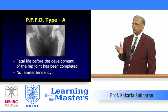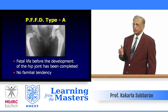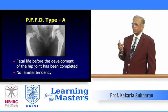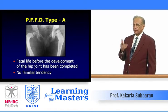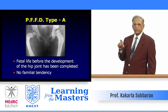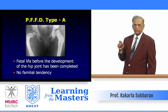Type A results from an insult to the limb bud early in fetal life, before development of the hip joint is completed. There is no familial tendency. Looking at the hip on the left side, there is a shepherd's crook deformity but no fibrous dysplasia. The femoral shaft is shortened because of the focal femoral deficiency at the neck and proximal shaft of the femur.